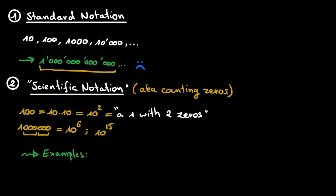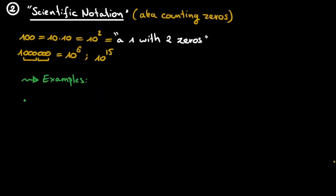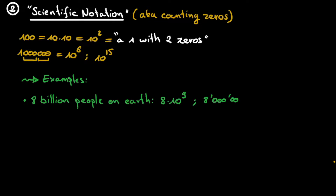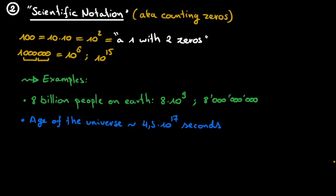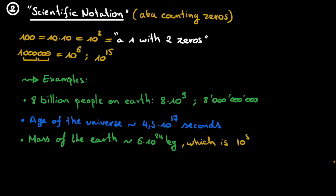This notation already allows us to tackle some bigger numbers. For example, we are closing in on 8 billion living people on earth — simply written as 8 times 10 to the power of 9. The age of the universe in seconds is 4.5 times 10 to the power of 17, which is quite a compact way to write 13.7 billion years in seconds. The mass of the earth is roughly 6 times 10 to the power of 24 kilograms, and the earth contains 10 to the power of 50 atoms — a 1 with 50 zeros.